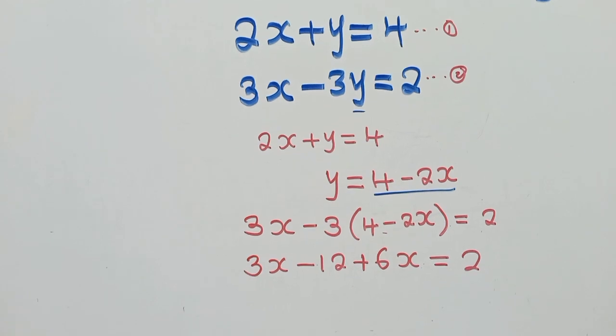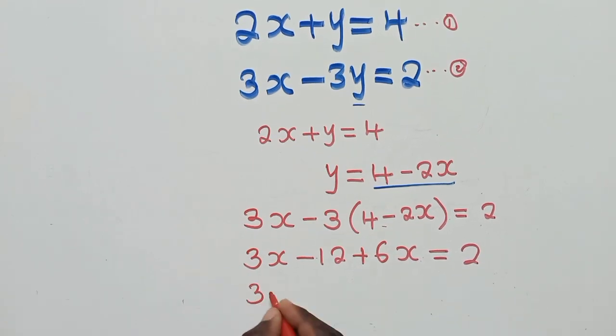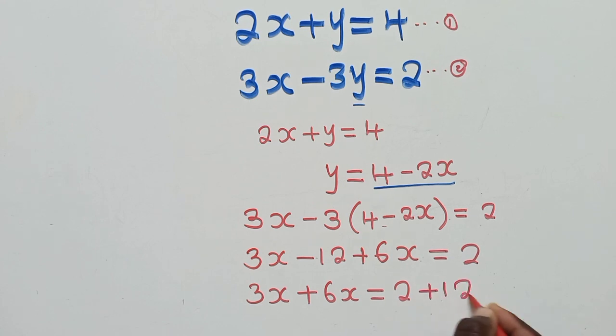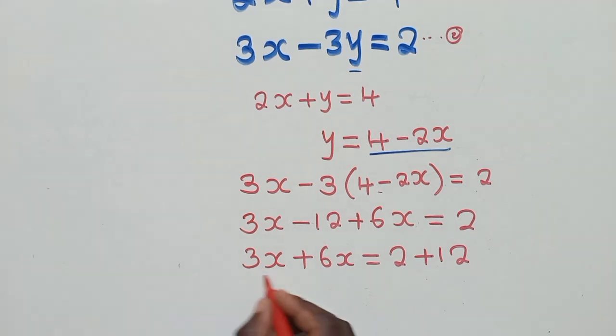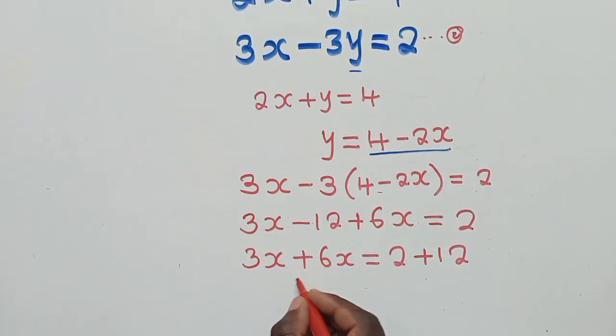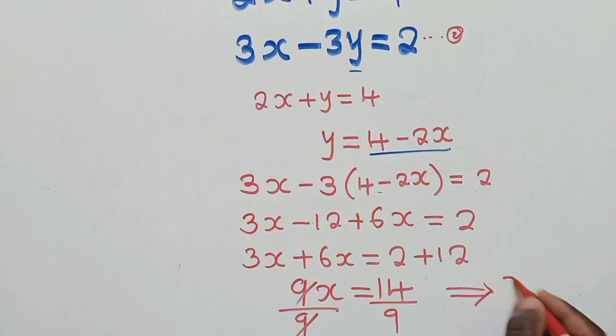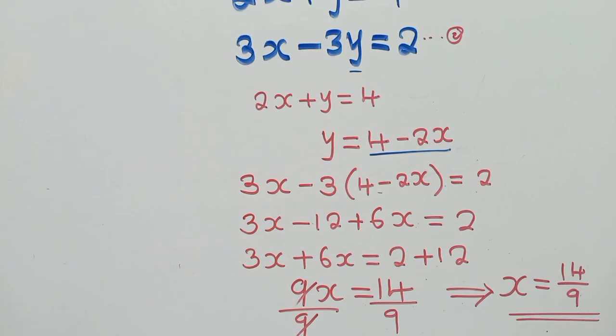So we group the like terms. We shall have 3x plus 6x is equal to 2 plus 12. After grouping the like terms, we now work out things. We have here, we shall have 9x is equal to 14. Remember, we're solving for x. Divide by 9, divide by 9. This side will cancel. So our x value will just be equal to 14 over 9. Like that.